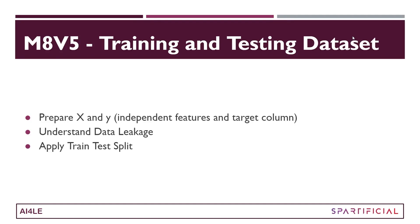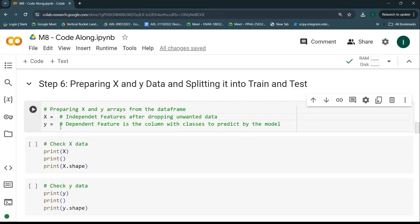Welcome to the fifth video of this module. Here we are going to prepare our training and testing dataset. The first thing will be to prepare our independent features and the target column, storing them into X and Y variables respectively. Then we'll understand an important concept called data leakage, after which we'll implement the train-test split to get our training and testing datasets.